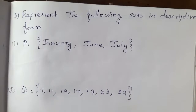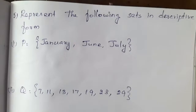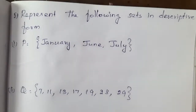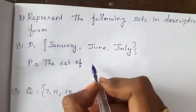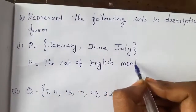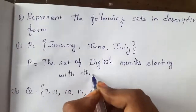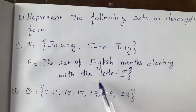Question 6: represent the following sets in descriptive form — that means describe in words. Set P = {January, June, July}. What is the similarity? All these months start with the letter J. Among the 12 English months, only these 3 start with J. So in descriptive form: P = the set of all English months starting with the letter J.